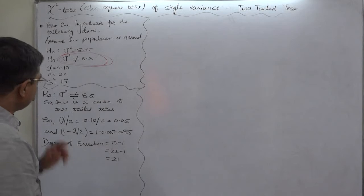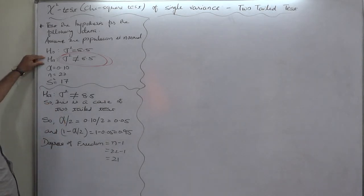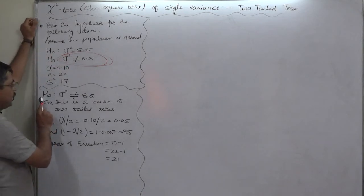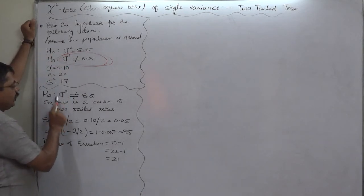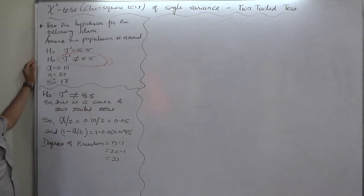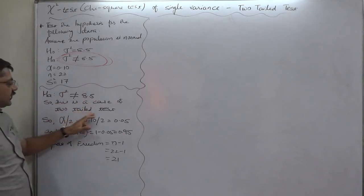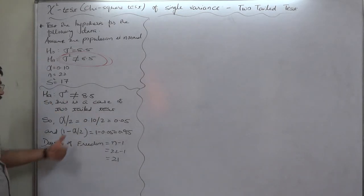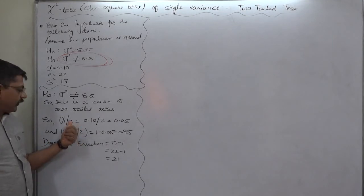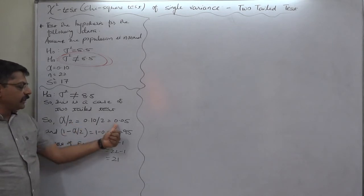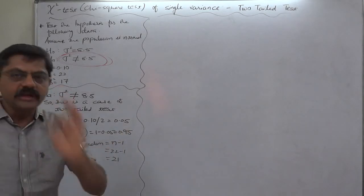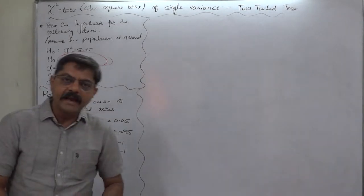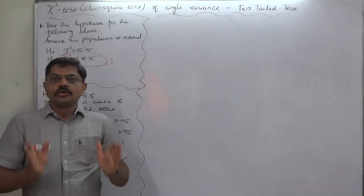Since the alternative hypothesis has the sign 'not equal to', we conclude that this is the case of a two-tailed test. If the case is of a two-tailed test, we have to split alpha: α/2 = 0.1 divided by 2 = 0.05. Now the new thing is: in case of a two-tailed chi-square test, we have to determine two critical values of chi-square.